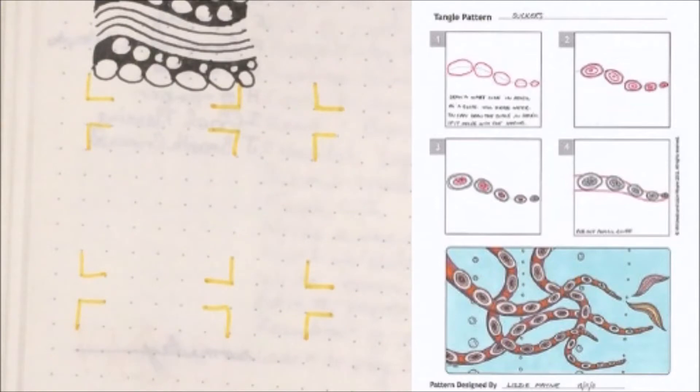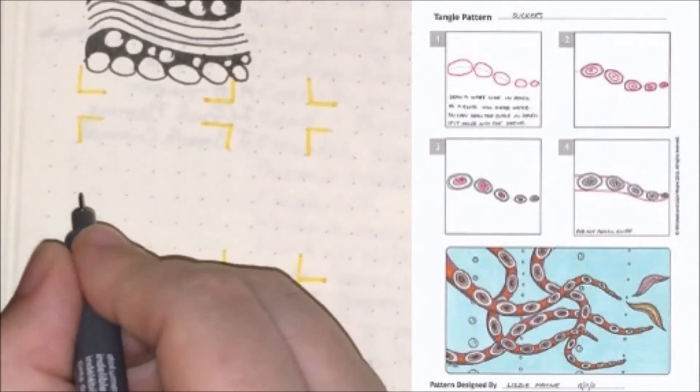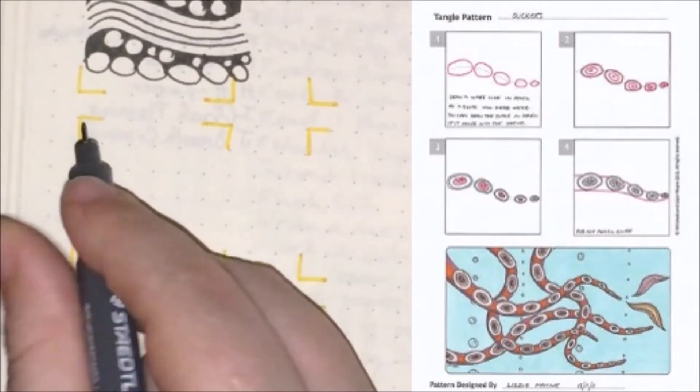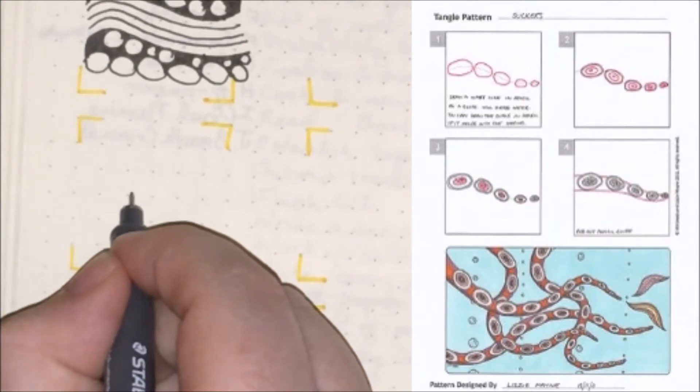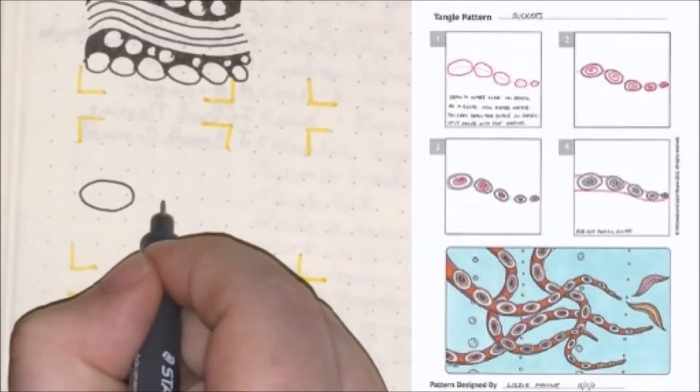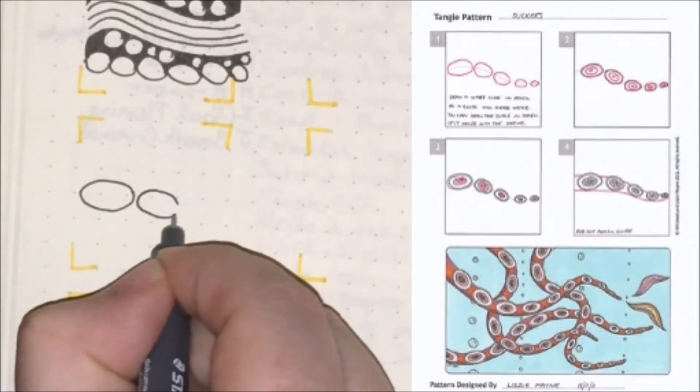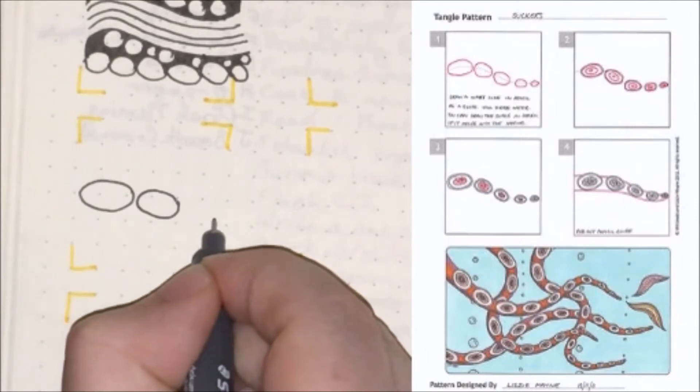And there's a couple ways you can get started with this one. If you use pencil, you can draw a wavy line using that pencil, and then on top of that wavy line, you can come in and you want to draw some ovals that follow the line and that get progressively smaller the further along the line you are.